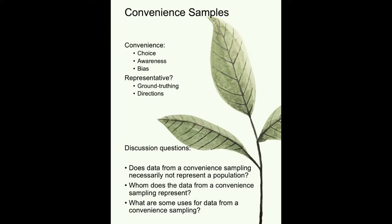There are two ways to do ground-truthing. One is to do a random sampling. The second is that with the Happiness Index, you can ground-truth because many of the questions are drawn from other surveys where data has already been gathered — you can check whether your data is similar to data gathered by another random method.